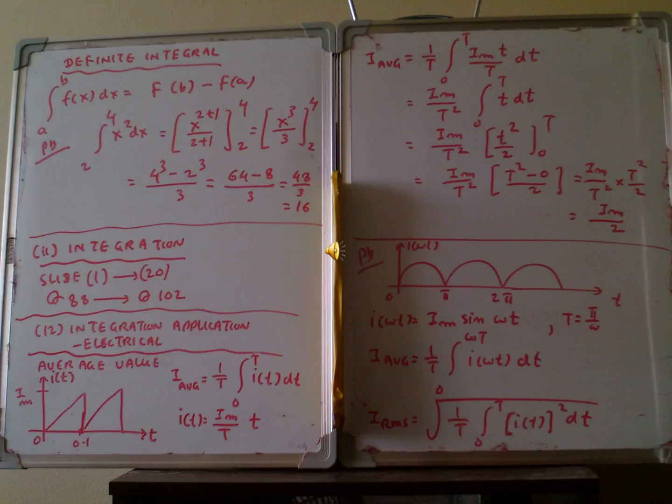The next problem: the limits are 0 to π and 2π. We have to find i average where i equals i_m sin(ωt). We write down the equation: i average equals 1/T integration from 0 to T of i(ωt) dt.